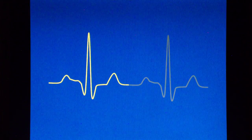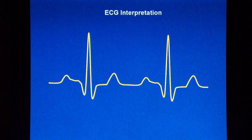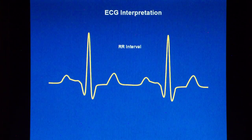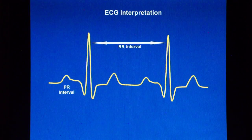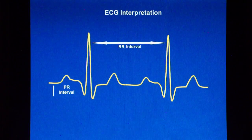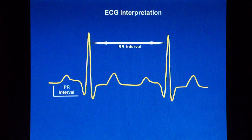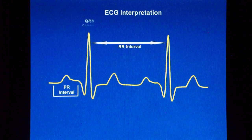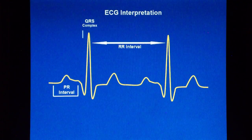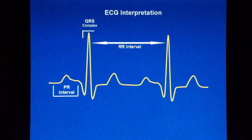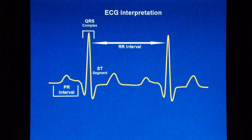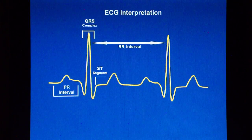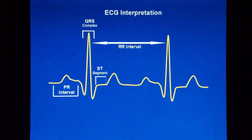Let's talk a bit about the interpretation of the ECG. The R-R interval provides information about the heart rate. The PR interval reflects the time taken by the electrical impulse to travel from the sinus node through the atrioventricular node and entering the ventricles, and it's a good estimate of atrioventricular node function. The QRS complex provides information about the ventricular depolarization. The ST segment is important as it shows the level of blood supply to the heart. The alteration of the ST segment can be diagnostic of heart conditions such as ischemia or infarction.